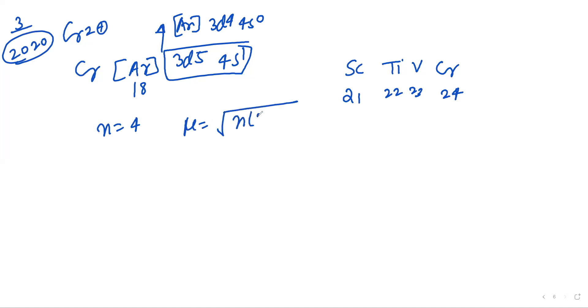Under root n into n plus 2. It will be equal to under root 24, so 4.9 Bohr magnetone. Answer is C option. Asked in 2020.